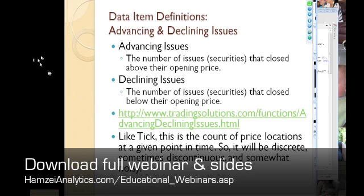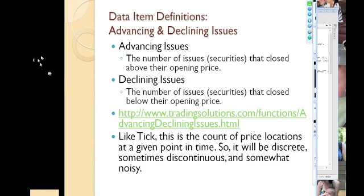This is like tick — a count of price locations at a given point in time. So it's discrete, kind of discontinuous, and somewhat noisy. I do not know how often it is calculated or published. I suspect this comes from trade station; they go through it amongst the numbers, but how often they do it I haven't found a reference for.